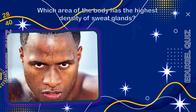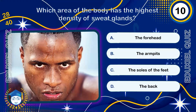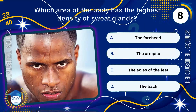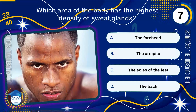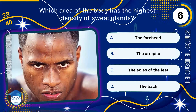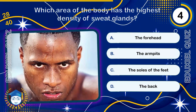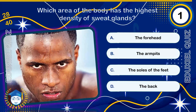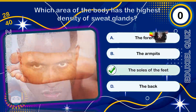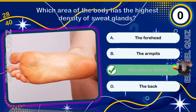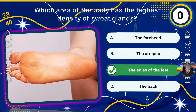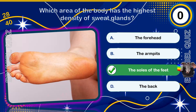Which area of the body has the highest density of sweat glands? The soles of the feet. The soles of the feet and the palms of the hands have the highest concentration of eccrine cooling sweat glands.